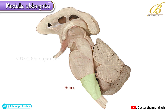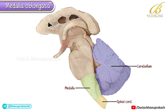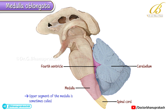Here we have a more detailed look at the medulla. It forms the caudal portion of the brainstem, lying just above the spinal cord. The cerebellum is positioned dorsally behind it, and in the upper region, the fourth ventricle separates the medulla from the cerebellum. This upper segment of the medulla is sometimes called the open part because of that open space of the fourth ventricle behind it.